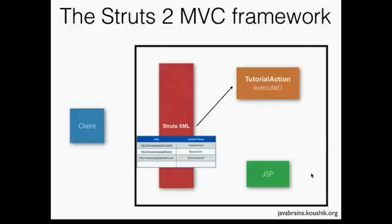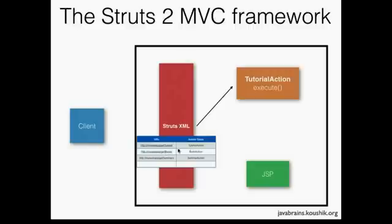But that's not really ideal because if you change the name of the JSP, you'd have to go to this method and change the name, then rebuild and redeploy the entire application, which is a pain. So ideally this should be a configuration item. We can have an additional column which says JSP, and then the struts XML does all the mapping — from a URL, go to an action class, execute the method, and go to the JSP.